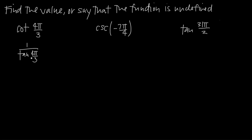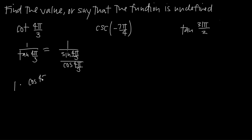We know that tangent is the same thing as sine divided by cosine, so instead of tangent of 4π over 3 in the denominator, we can have sine of 4π over 3 divided by cosine of 4π over 3. When you're dividing by a fraction, instead of dividing by it, you can multiply by its reciprocal — so this becomes 1 multiplied by cosine of 4π over 3 divided by sine of 4π over 3. Now we have everything in terms of cosine and sine.